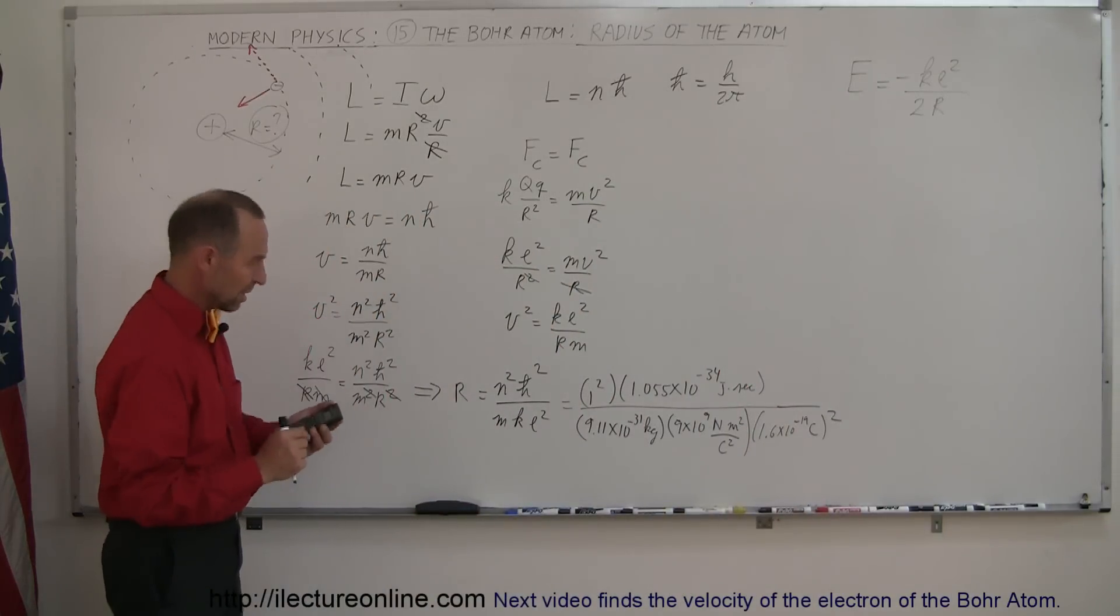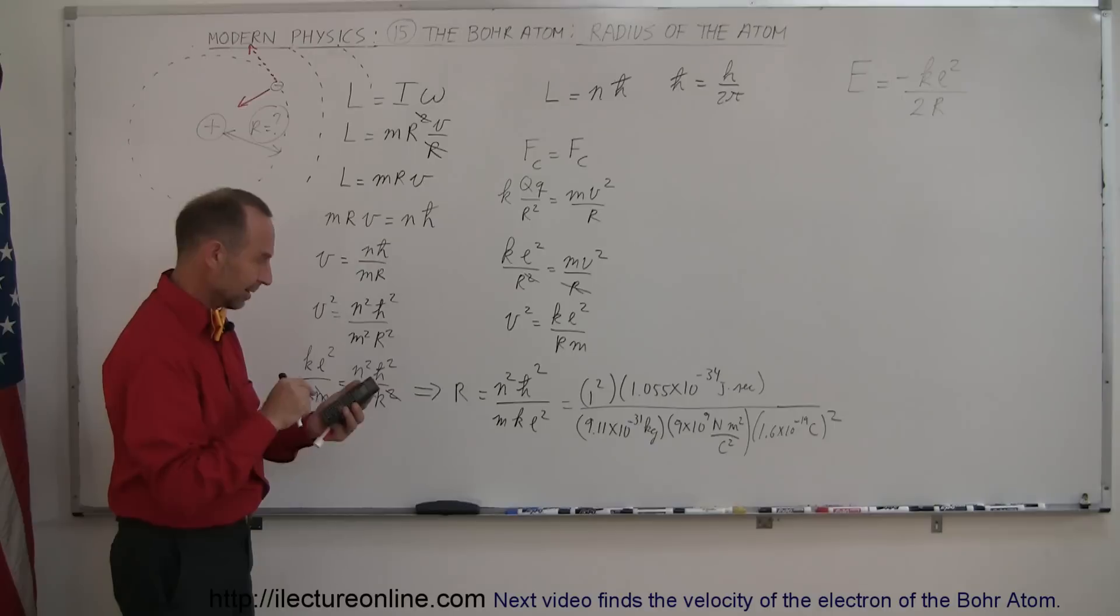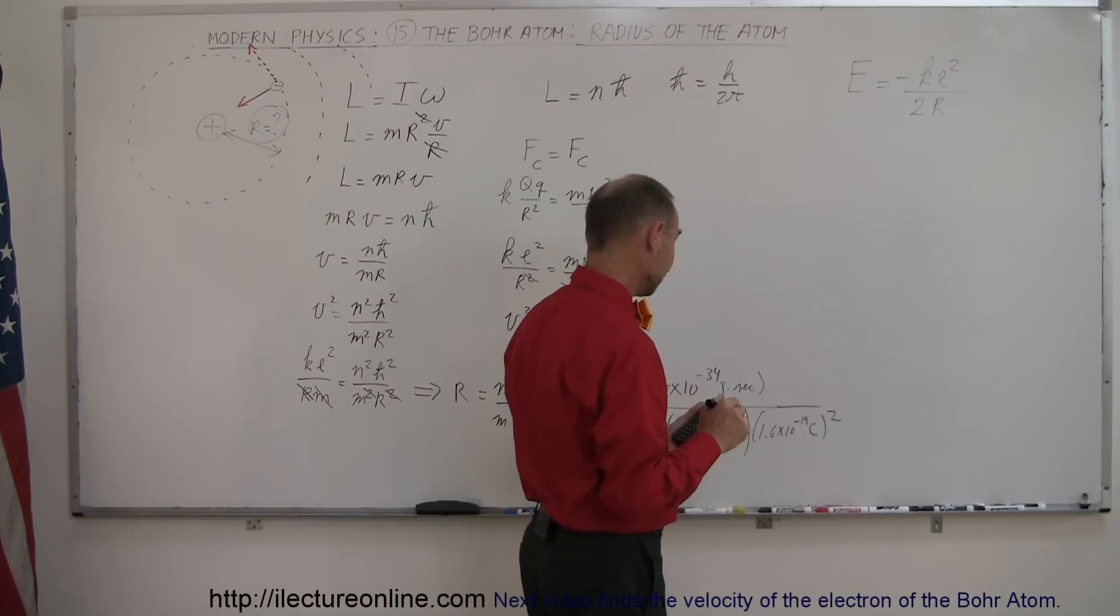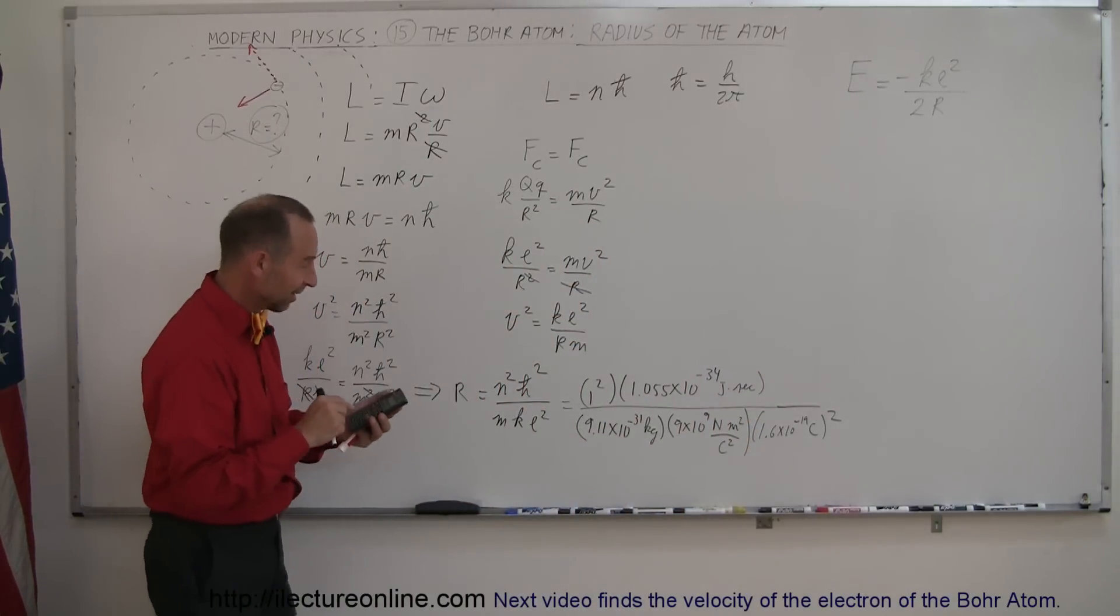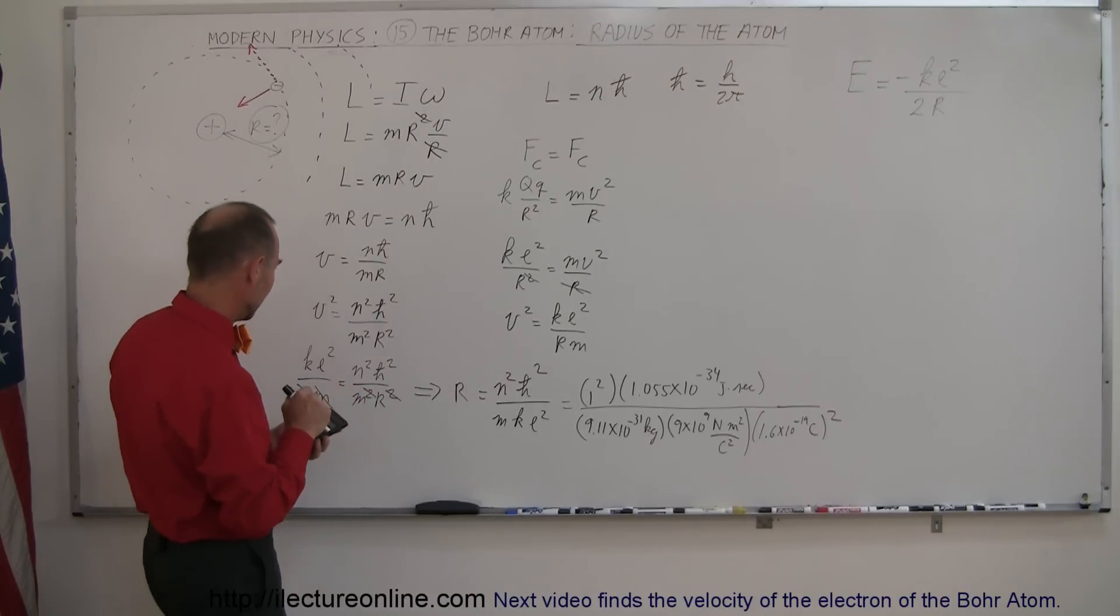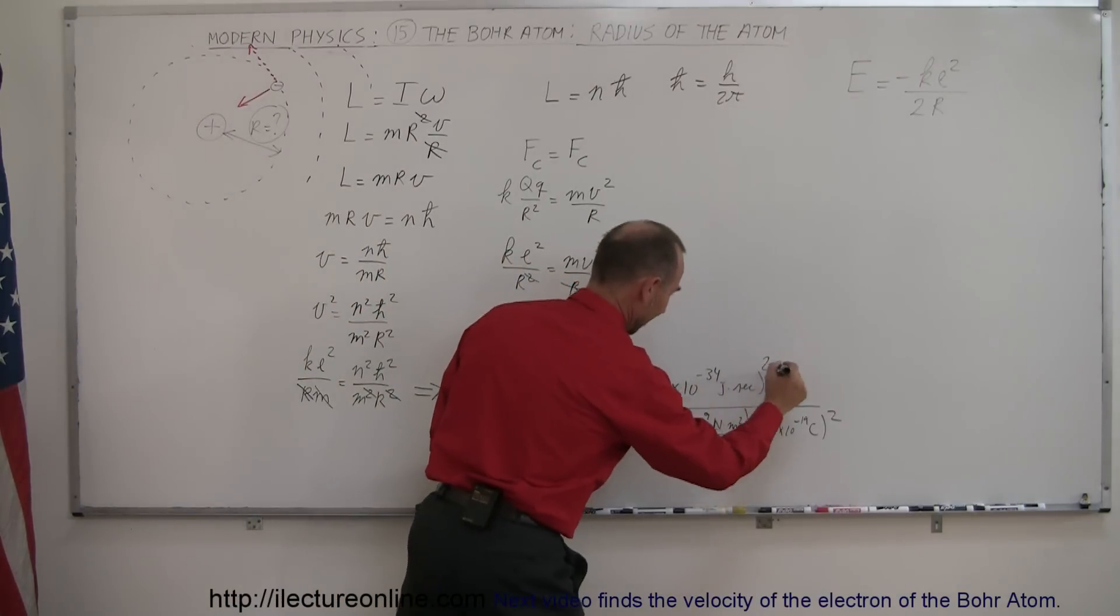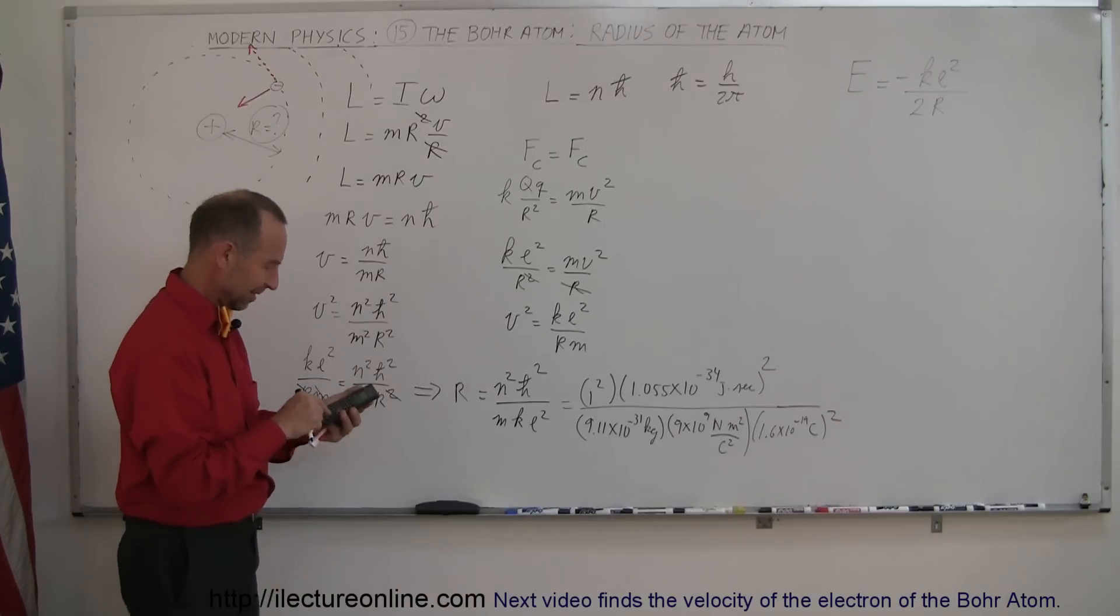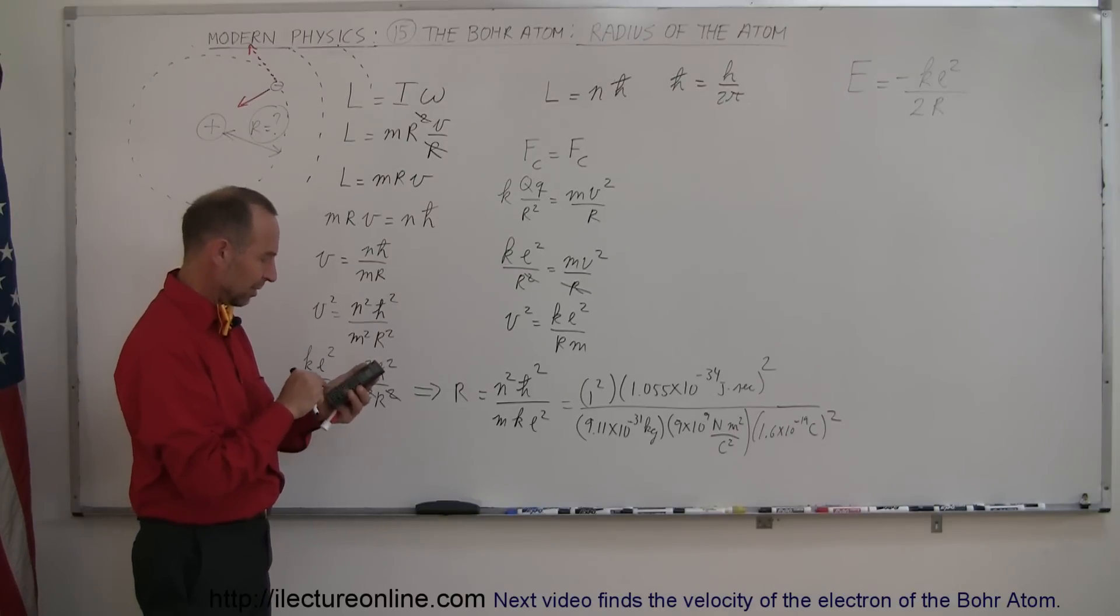That should give us the radius. Let me try again - 1.055×10⁻³⁴, and do we have to square that? There's my error, I forgot to square that. I need to square that, divided by 9.11×10⁻³¹, divided by 9×10⁹, and divided by 1.602×10⁻¹⁹, and we have to square that as well.